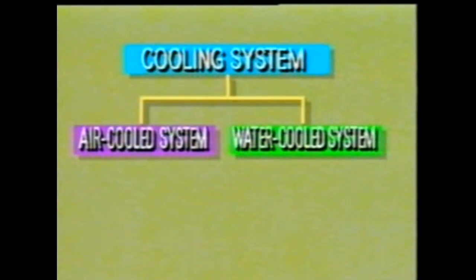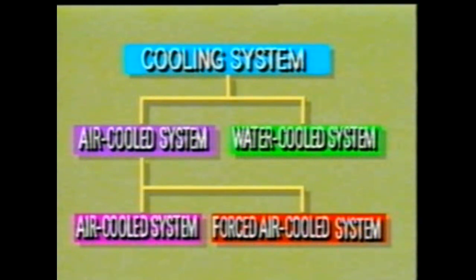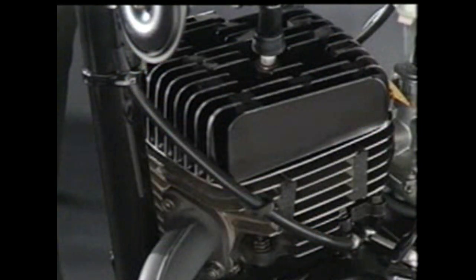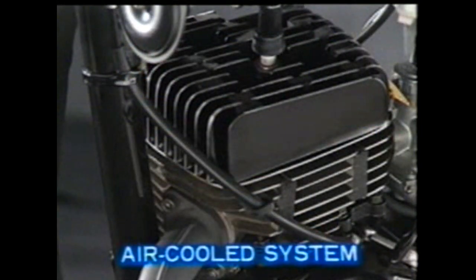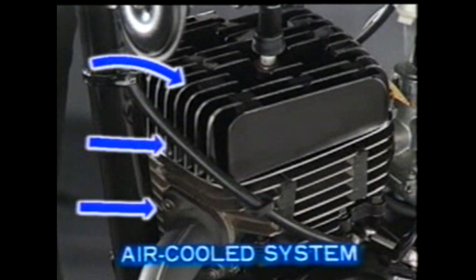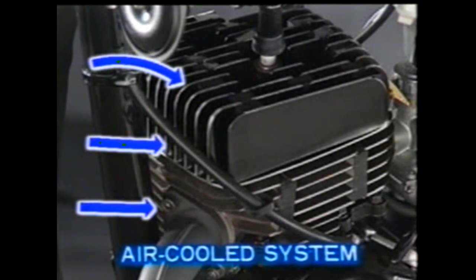There are two basic types of cooling systems: air-cooled systems and water-cooled systems. Air-cooled systems can be divided into natural air-cooled systems and forced air-cooled systems. In natural air-cooled systems, fins cast into the cylinder head and around the cylinder itself aid in transferring the heat of the engine to the air of the wind.